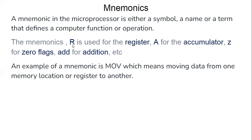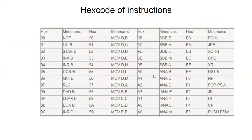In mnemonics, for example, R is used for register, A for accumulator, Z for zero flag, and ADD for addition. It is an abbreviation. An example of a mnemonic is MOV — MOV means moving. Instead of writing the full word MOVING, the microprocessor manufacturer gives us MOV, which means moving data from one memory location or register to another. Now we will see some of the mnemonics and their hex codes for the Intel 8085 microprocessor.